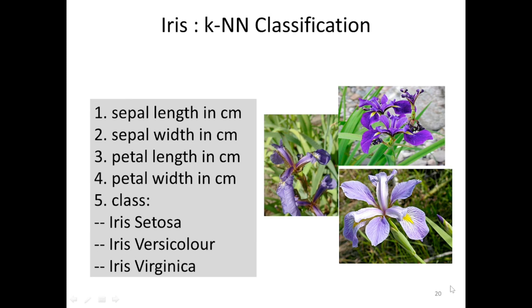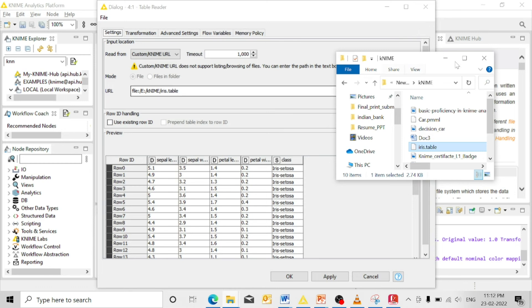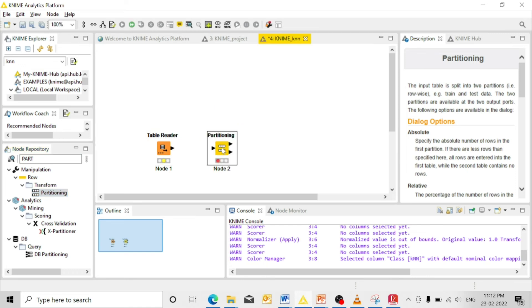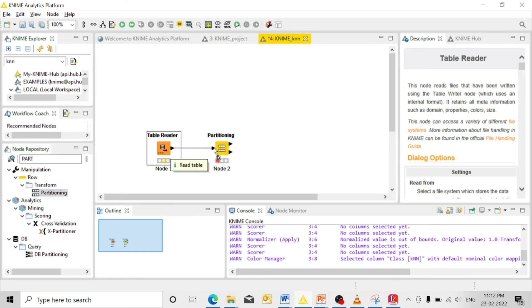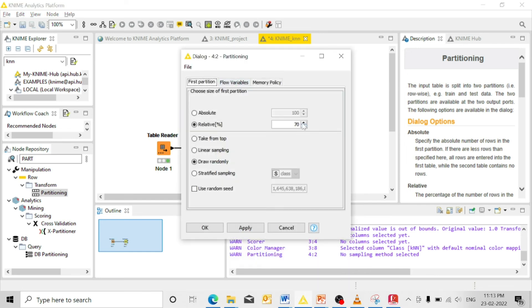We are going to use this Iris dataset. Let us drag and drop the Iris table. To get this dataset, in the node repository search for partitioning node to partition our dataset into train dataset and test dataset. Connect the output of this data table reader to the partitioning node, right click and execute it. Now it's time to configure this partitioning node. Then apply, OK.